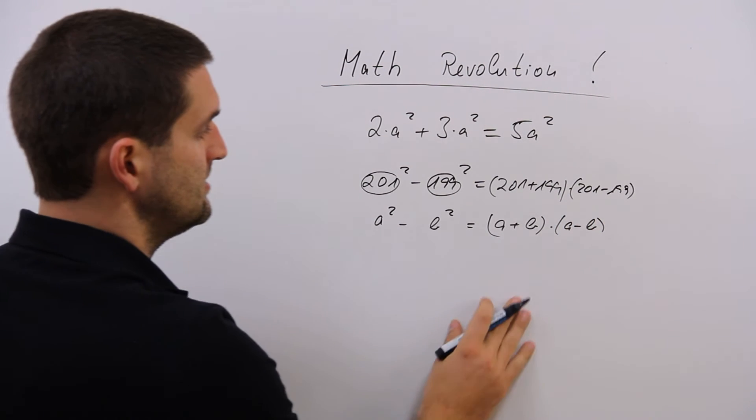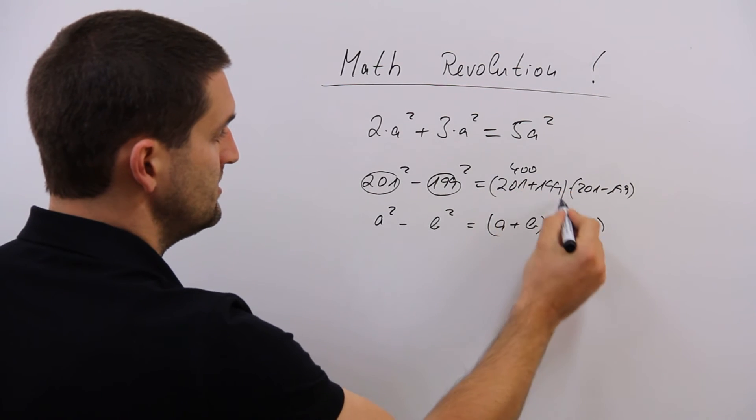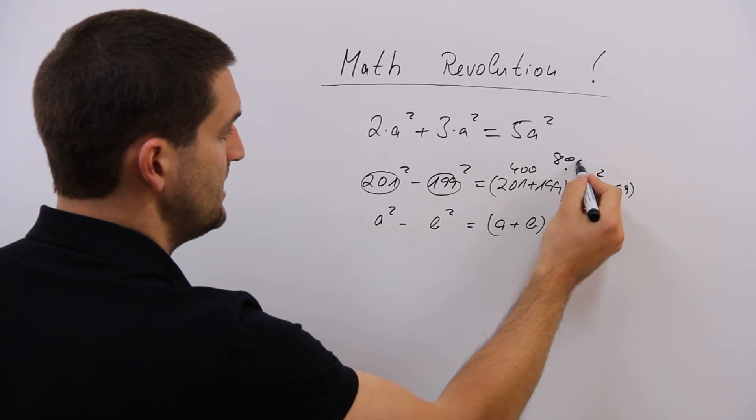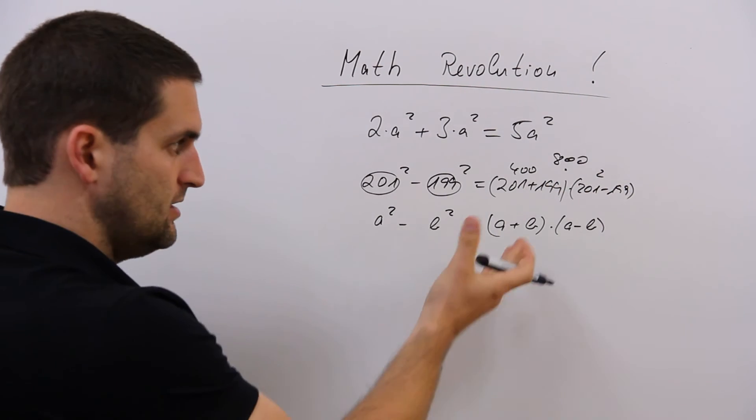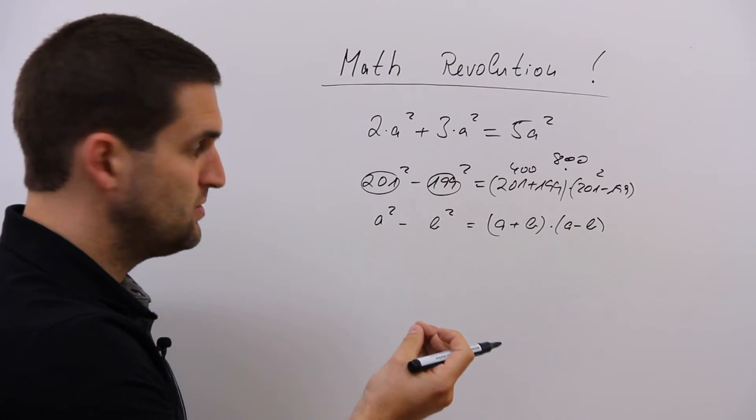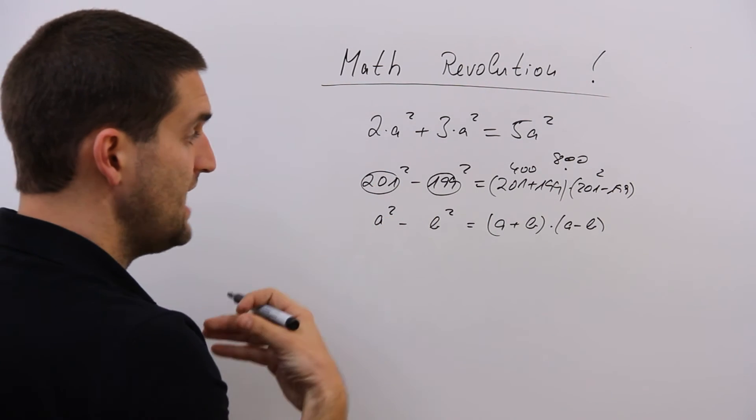This is equal to 400 times 2 is 800. Easy. You will never need it in your life like this, but you understand what's happening here. You see the structure and this is what I think, how math should be taught in school.